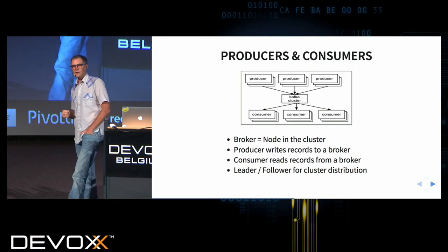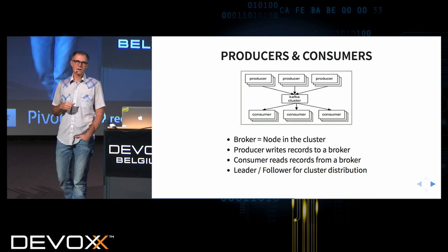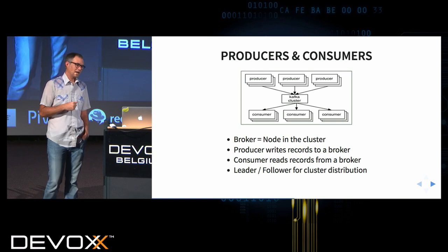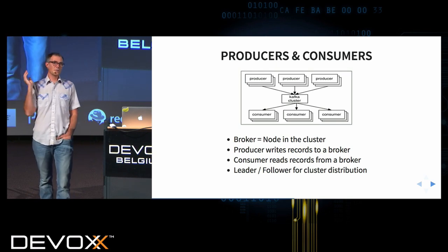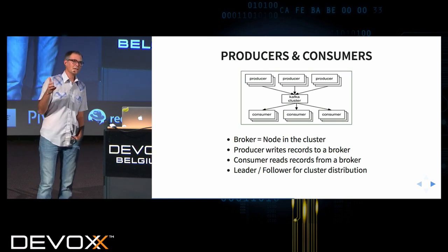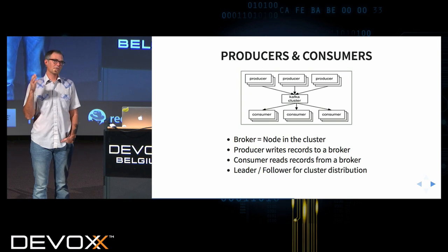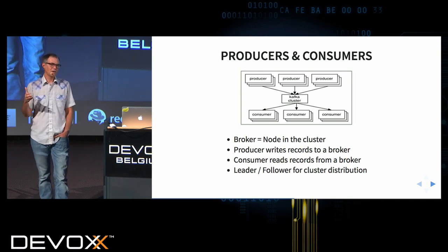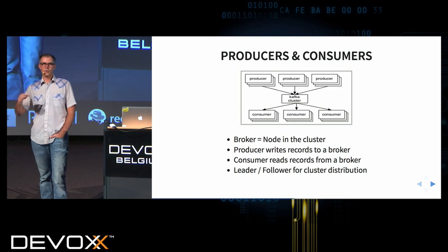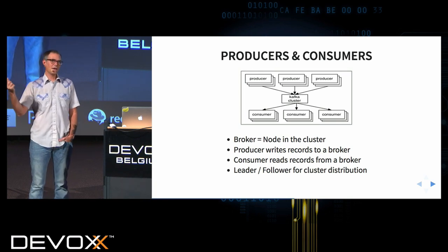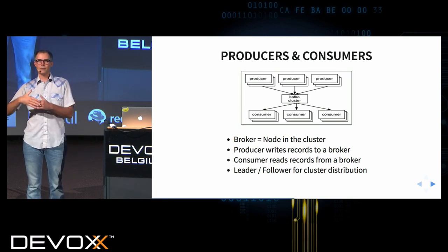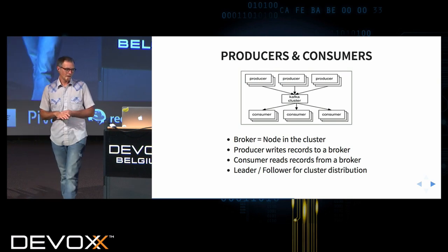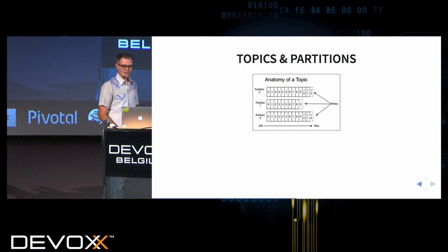Kafka uses a leader-follower architecture for cluster distribution. There's an elected leader for a given part of the Kafka cluster, and then there will be followers that are receiving the records being written to the leader.